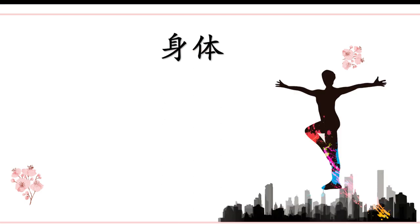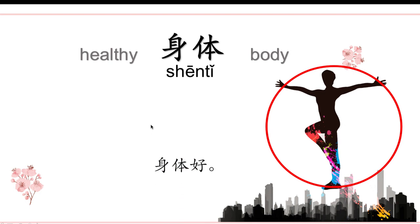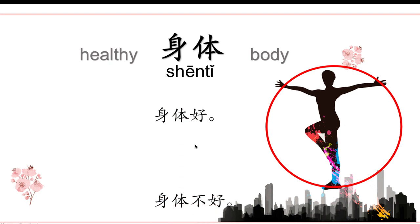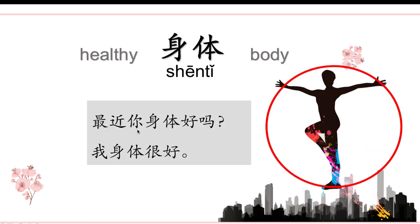The second word is 身体。身体 — the first meaning is health condition, and the second meaning is body. 身体好 — in good health. 身体不好 — not in good health condition. So if you were already in China and we met each other, we would ask 最近，身体好吗？ Just like in the dialogue: 最近，你身体好吗？我身体很好。We use it a lot.